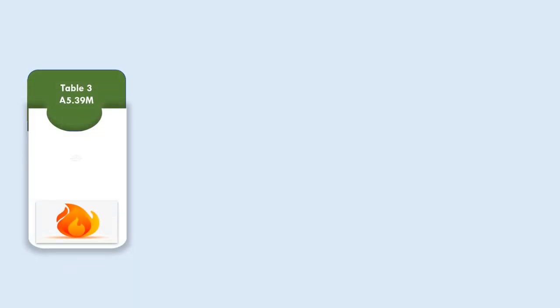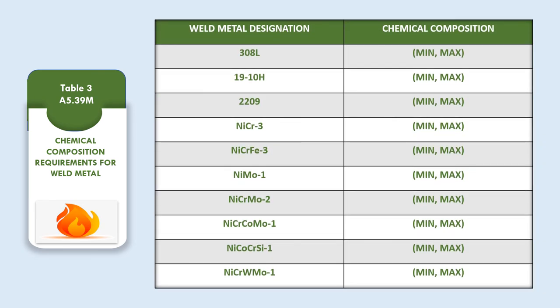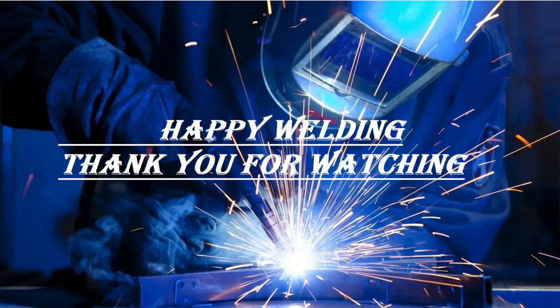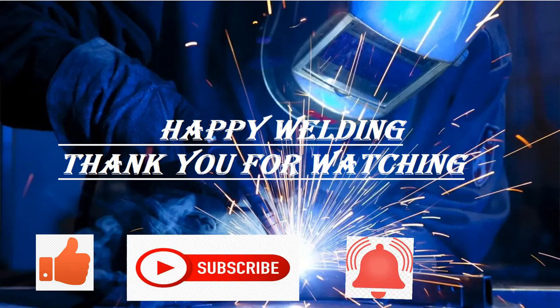Table 3 gives details about the chemical composition requirements for weld metal against each weld metal designator. For each specific element, there are weight percentage minimum and maximum requirements which must be fulfilled.